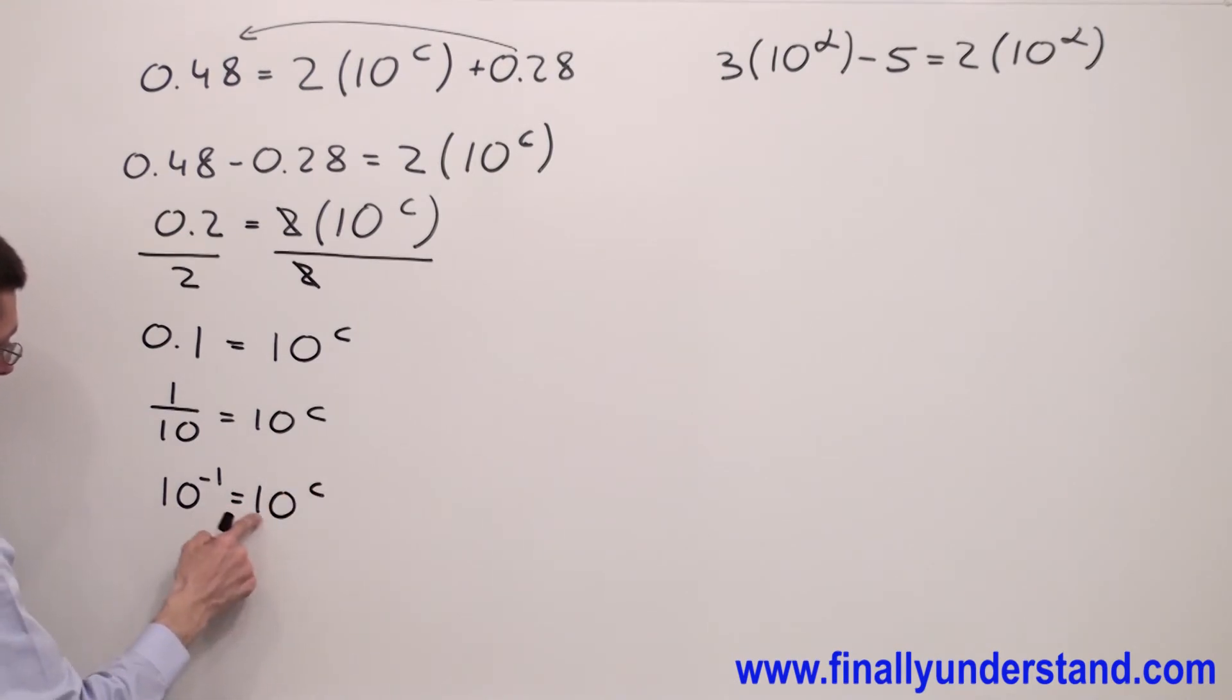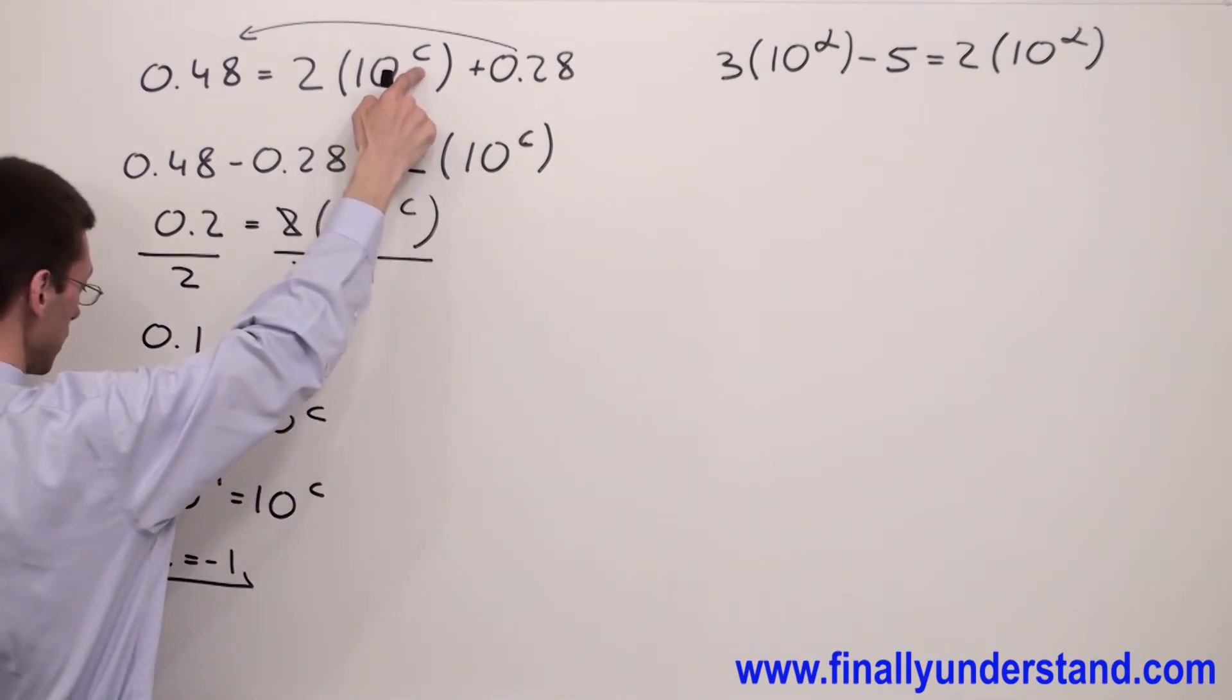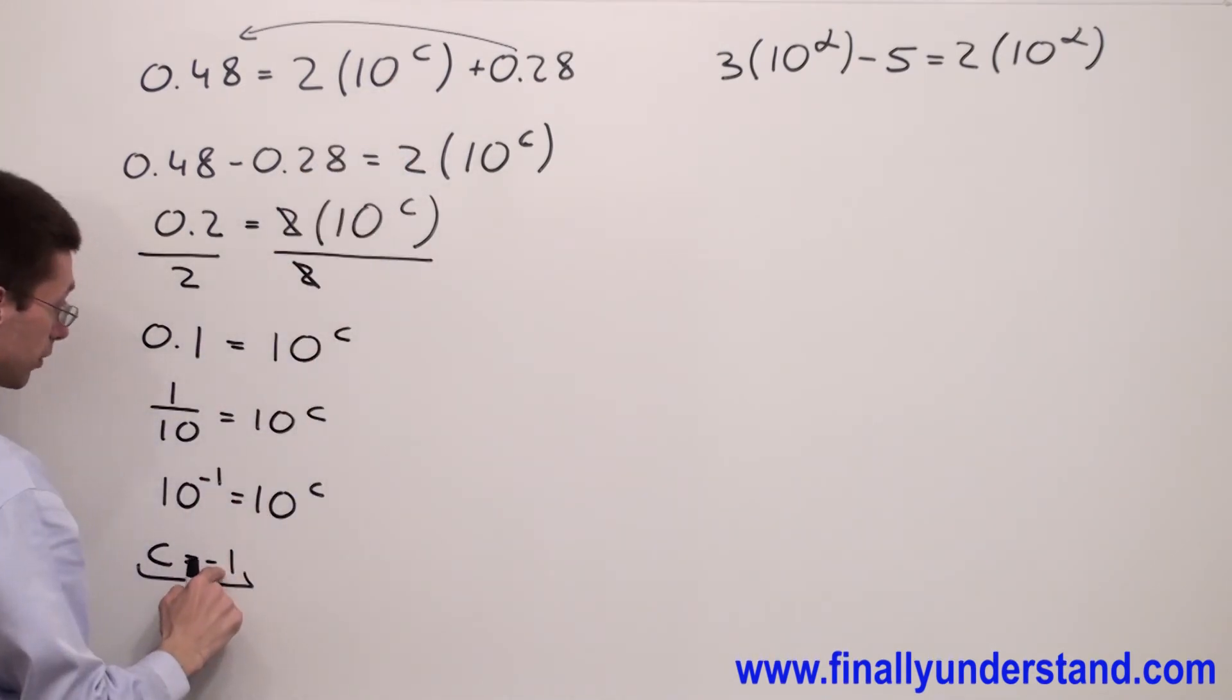Anytime you have the same base you're supposed to ignore the base and copy down the exponents. You will have C equals negative 1. This is the answer to this problem. If you want to verify your answer, just replace this C by negative 1. As you can see, we solved this problem without using the logarithm.